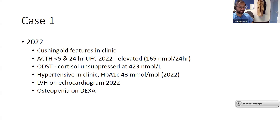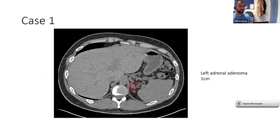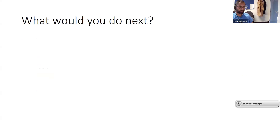When I saw him in 2022 in clinic, things had changed — he now looked Cushingoid. Biochemically he had a raised 24-hour urine cortisol, suppressed ACTH, and failed his overnight dexamethasone suppression test with a cortisol of 423. He was hypertensive, had evidence of prediabetes, left ventricular hypertrophy on echocardiogram, and osteopenia on bone density scan. Clearly Cushing's was now affecting his organs. A repeat CT showed a new 1 cm left adrenal adenoma. In Carney's complex the disease is bilateral — options are to take both adrenals out, or remove the abnormal one first and buy the patient time before a completion bilateral adrenalectomy, accepting eventual hypoadrenalism.